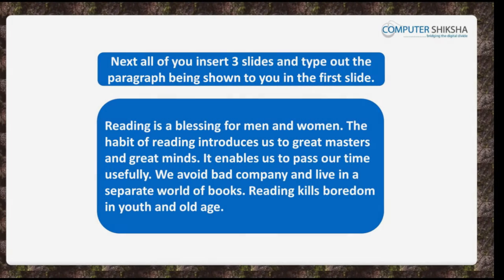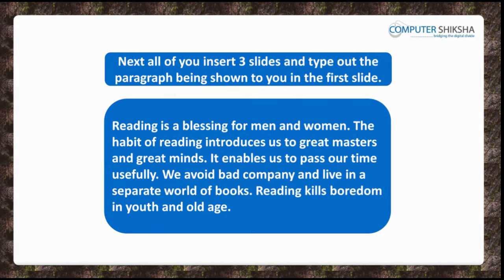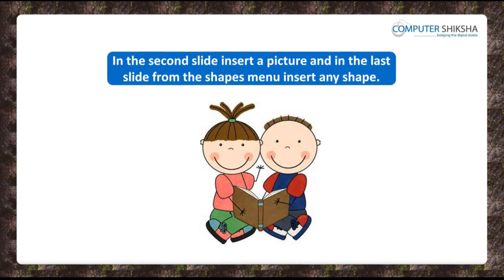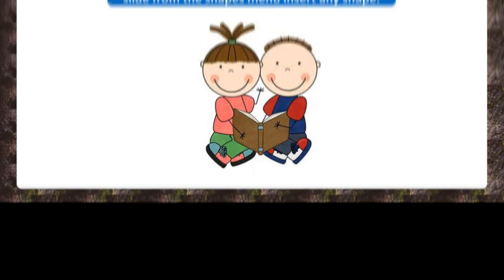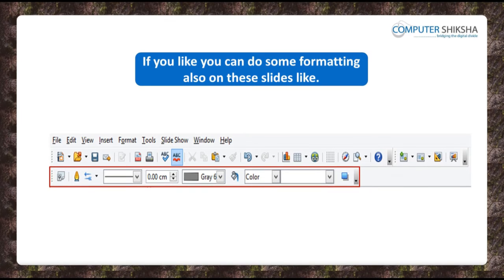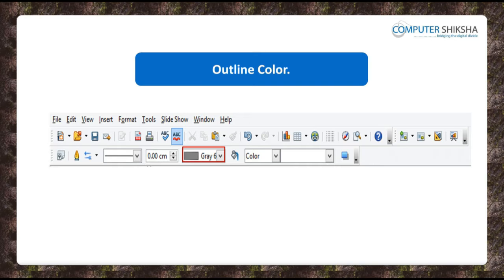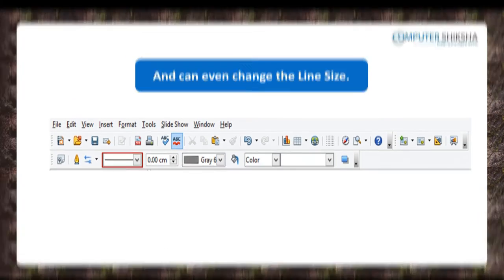Next, all of you insert three slides and type out the paragraph being shown to you in the first slide. In the second slide, insert a picture, and in the last slide, insert any shape from the shapes. If you like, you can do some formatting on these slides like Outline Color, Fill Color.